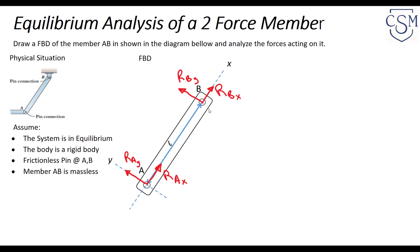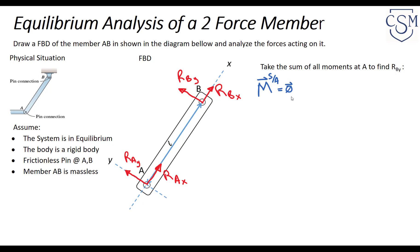We have reactions acting at two points. Note this still counts as a two-force member because RBX and RBY are vector components of one single force acting at B. We take the vector sum of all moments about point A, which equals the zero vector according to equilibrium.